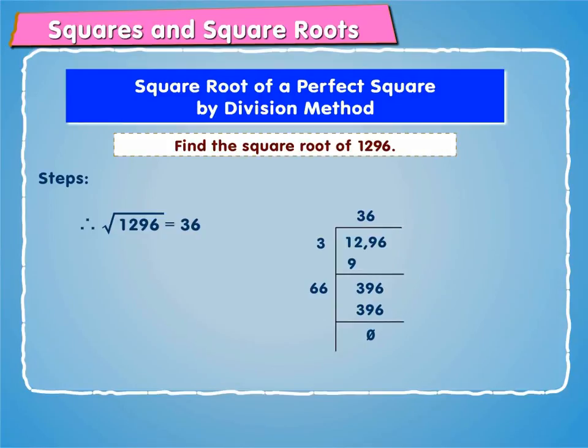Therefore, square root of 1296 is equal to 36. Let us now look at the next one.